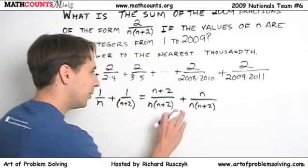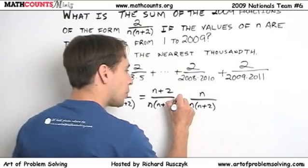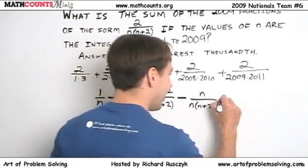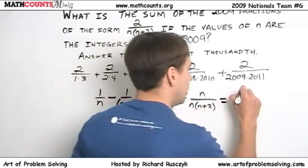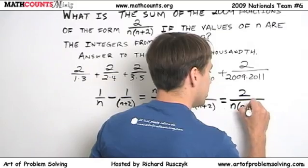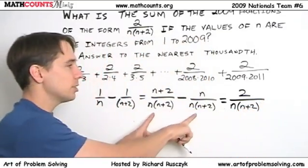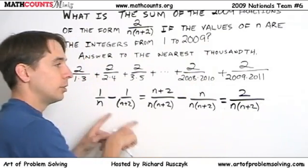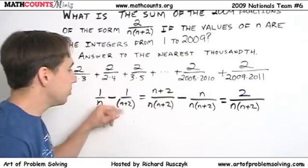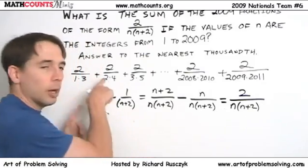But wait a second. We don't have to add. What if we subtracted? Ha! Check this out. If we subtract, the n's cancel, and we've got 2 over n times n plus 2. And we found an interesting place where we get 2 over n times n plus 2. It's just subtracting 1 over n minus 1 over n plus 2. Now that's interesting, so maybe it'll help us with this sum.